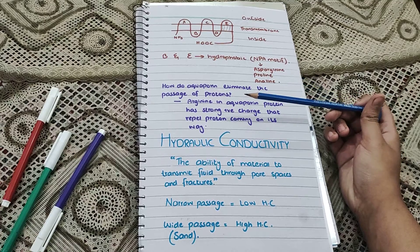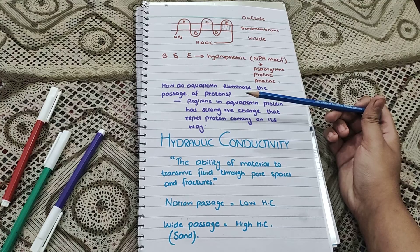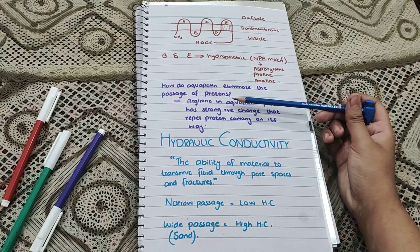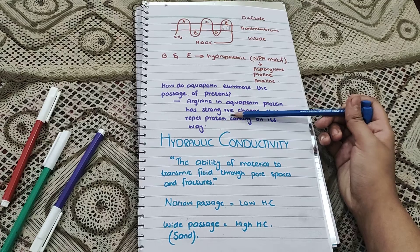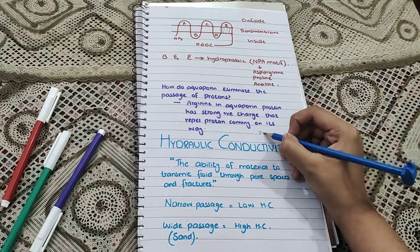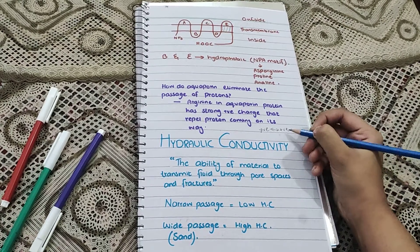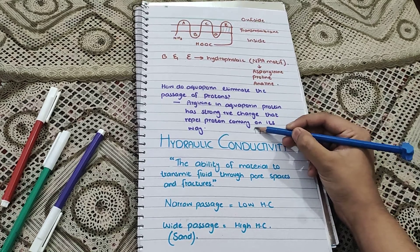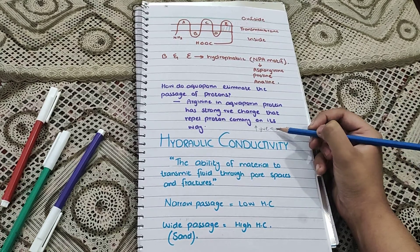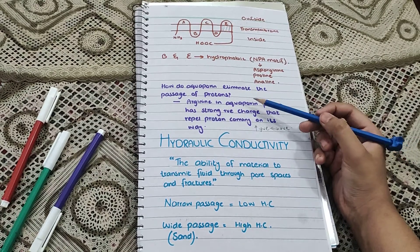Why does aquaporin repel protons? The aquaporin protein has a key substance — arginine — present in it, which has a strong positive charge. Since positive charge repels positive charge, arginine repels protons. The stronger the positive charge, the higher the repelling tendency. That is why the aquaporin protein eliminates the passage of protons.